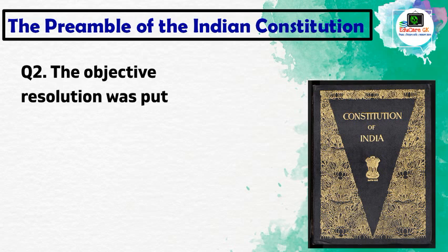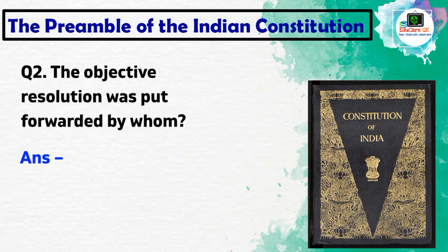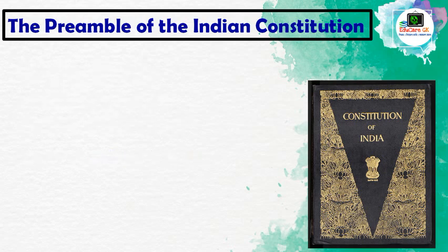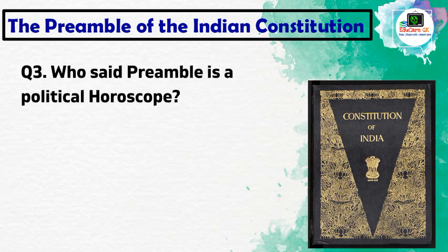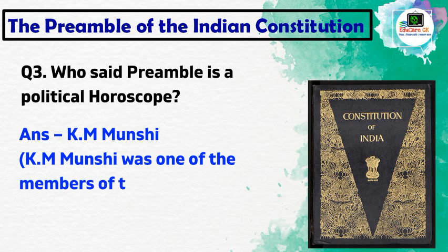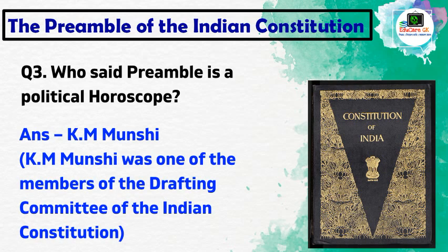The objective resolution was put forward — this is an important question. The preamble is called the political horoscope of the constitution. The political horoscope — who put it forward? Who was the member of the drafting committee of the Indian Constitution?